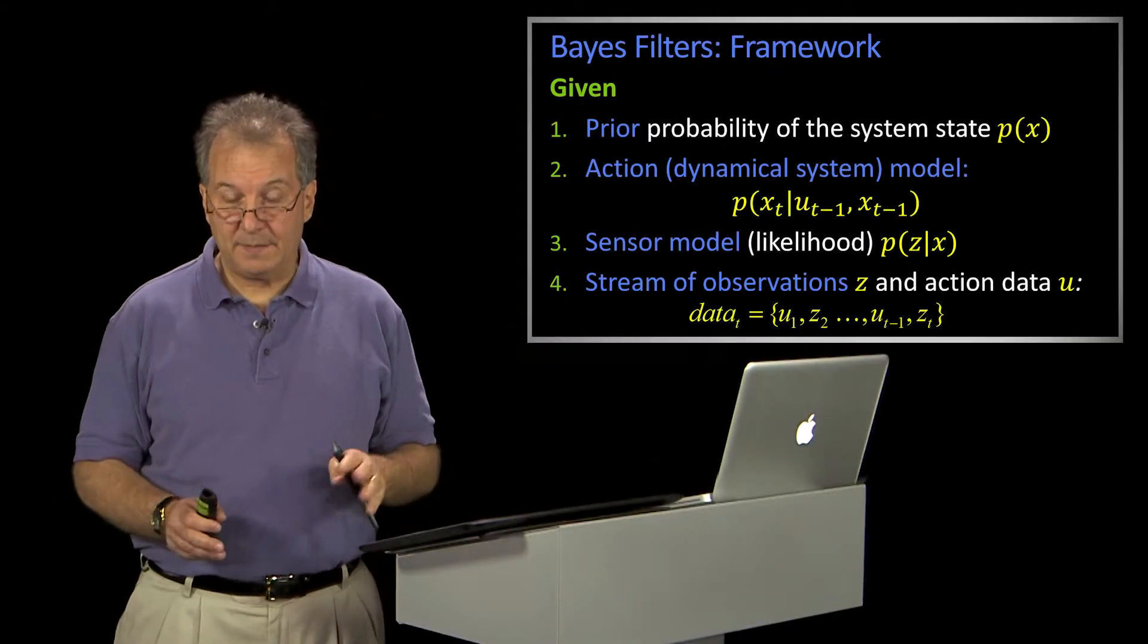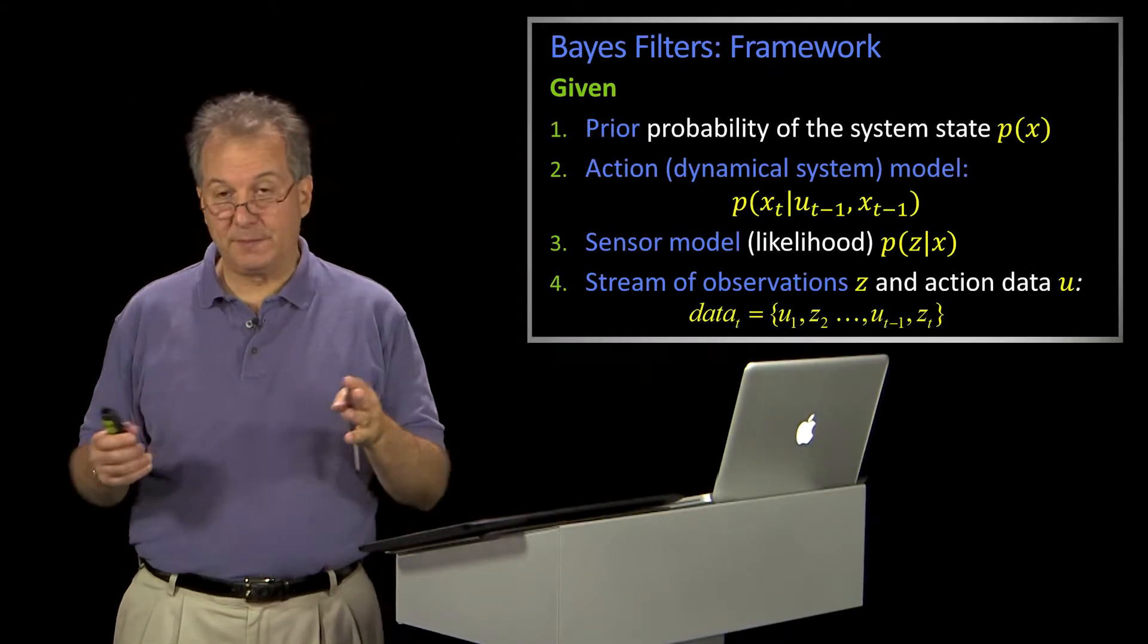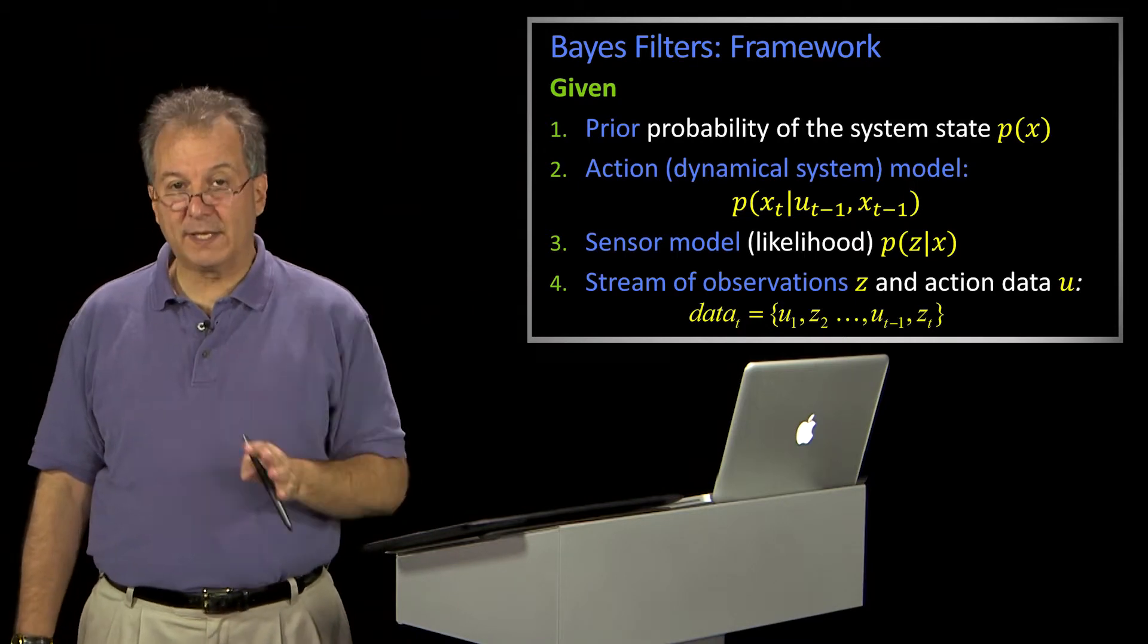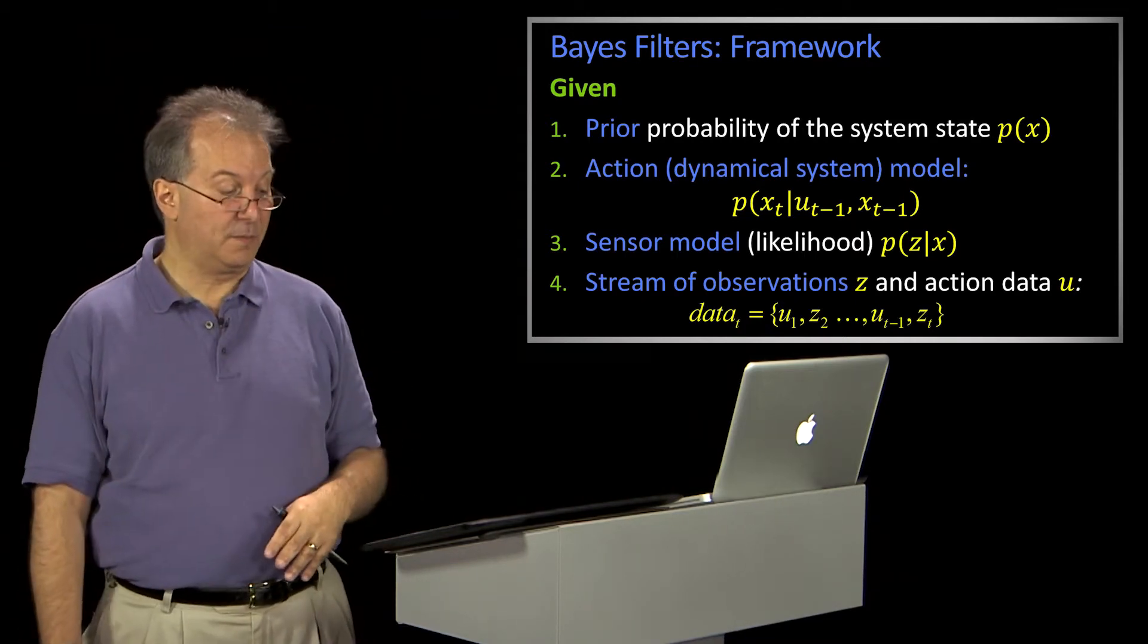For that robot that I described, the state is obvious, the map will be easy. The thing that's tricky, not tricky, the thing we have to define is the sensor model.